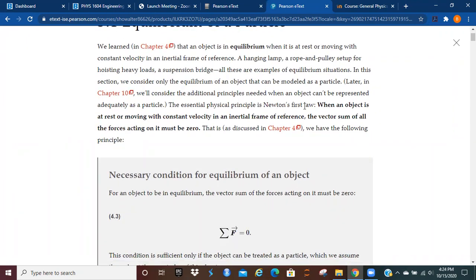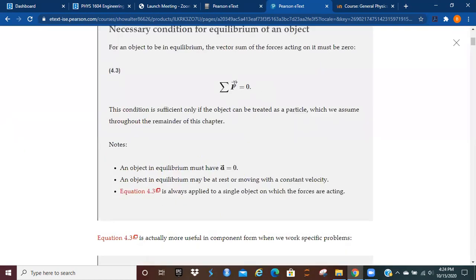Let's remember Newton's first law. When an object is at rest or moving with constant velocity in an inertial reference frame, the vector sum of all the forces acting on it must be equal to zero. An object in equilibrium must have acceleration equal to zero. An object in equilibrium may be at rest or moving with constant velocity.